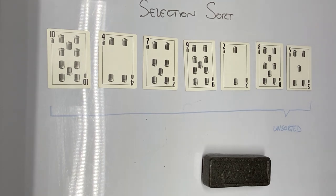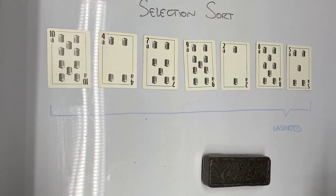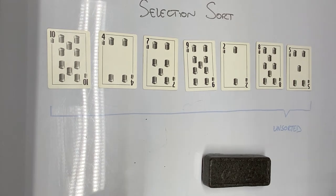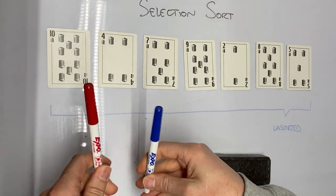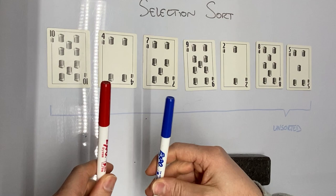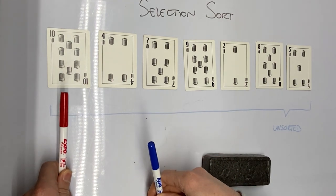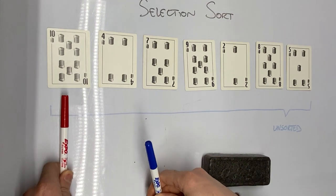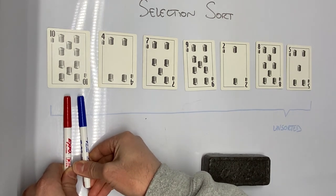What I'm going to do is look at each card — basically scan through the entire unsorted region and find the card with the least value. I'll use the red marker to denote which card currently has the least value, and the blue marker to denote which card I'm currently looking at.